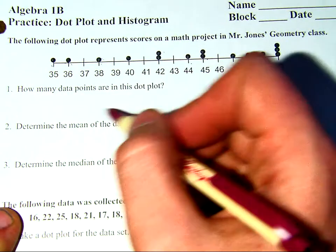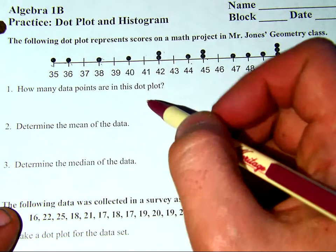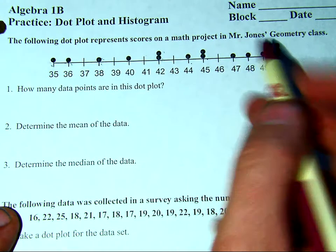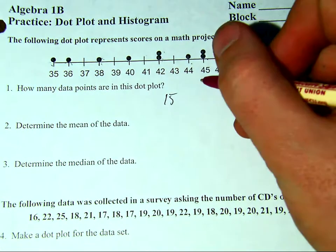So first question, how many data points are in this dot plot? I have 1, 2, 3, 4, 5, 6, 7, 8, 9, 10, 11, 12, 13, 14. I have 15 plots.